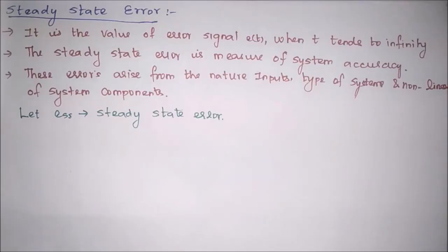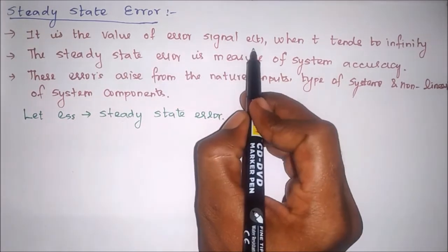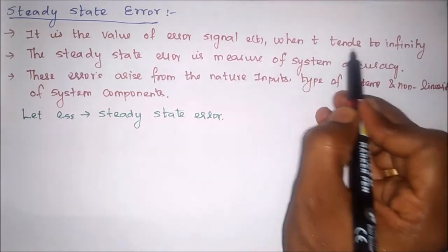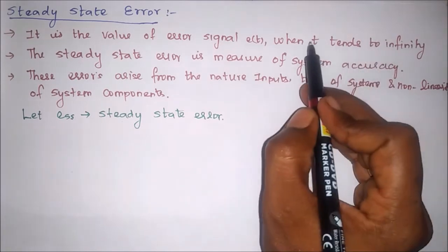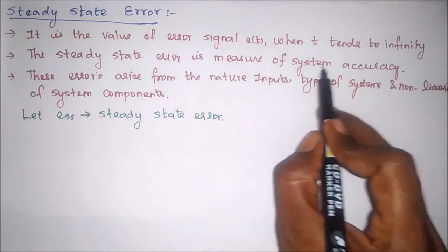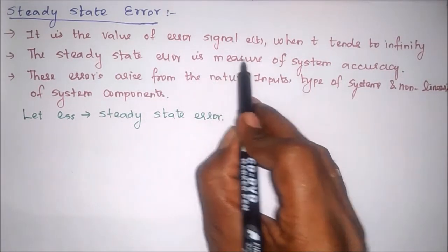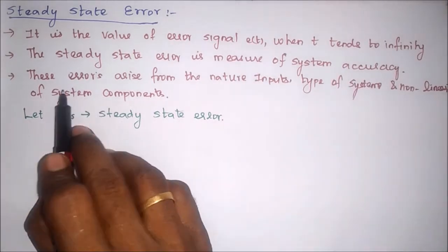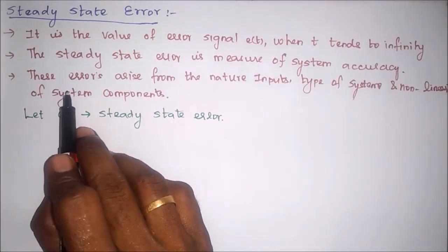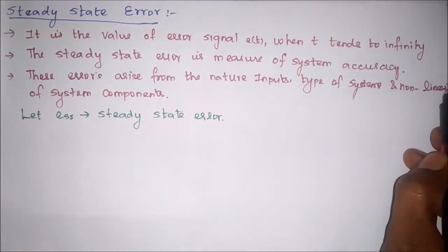In this video we are going to see about steady state error. The definition of steady state error is: it is the value of error signal e(t) when time tends to infinity. Steady state error is a measure of system accuracy — by using steady state error we can measure the system accuracy. Steady state error depends upon the nature of inputs, type of system, and non-linearity of system components.